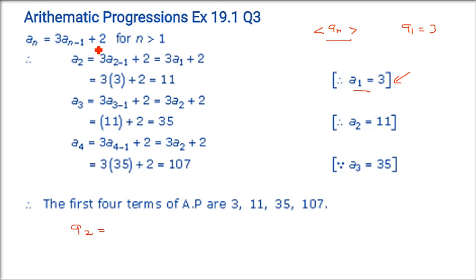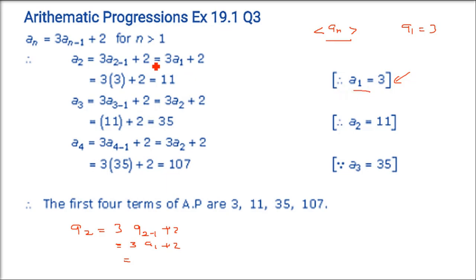So what is a₂? Using the formula with n=2: a₂ = 3·a₁ + 2. a₁ = 3, so a₂ = 3(3) + 2 = 9 + 2 = 11. This is called a recursive type — you need the previous term to find the next.